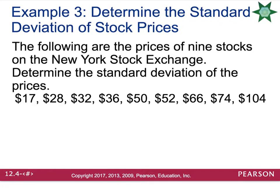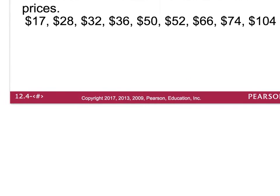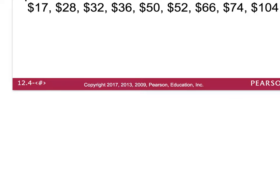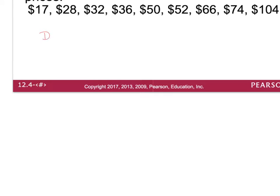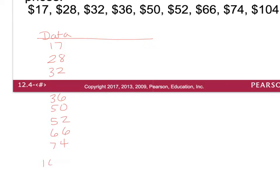Let's try a problem. The following are prices of 9 stocks on the New York Stock Exchange: 17, 28, 32, 36, 50, 52, 66, 74, and 104. We need to determine the standard deviation of these prices. I'll make a table with the data listed in the first column.